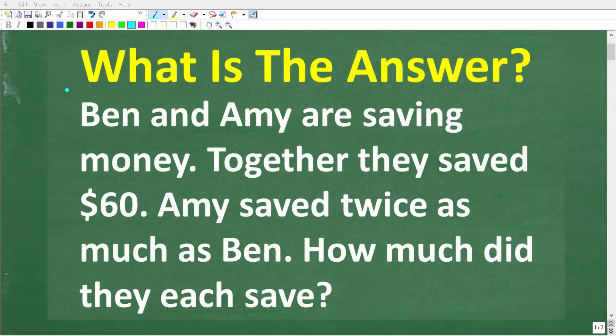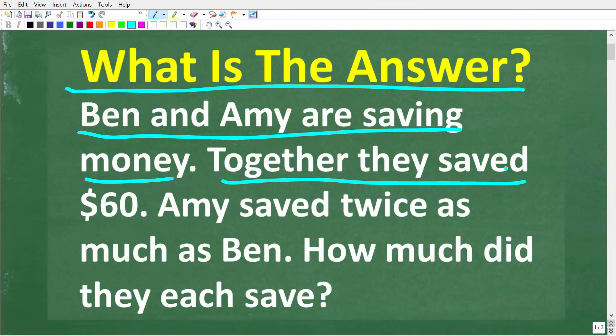Can you figure out the answer to this math problem? Here is the question: Ben and Amy are saving money. Together they saved $60. Amy saved twice as much as Ben. How much did they each save?